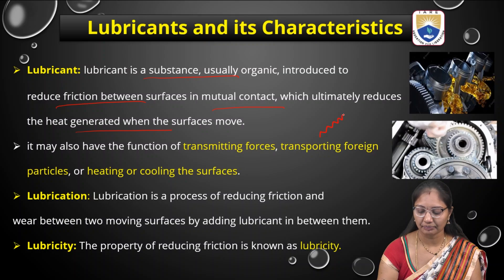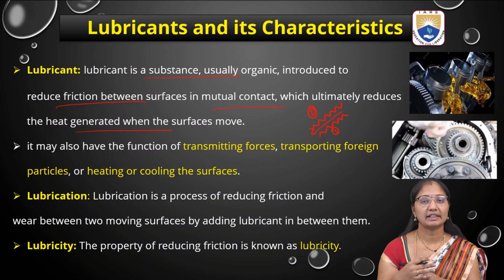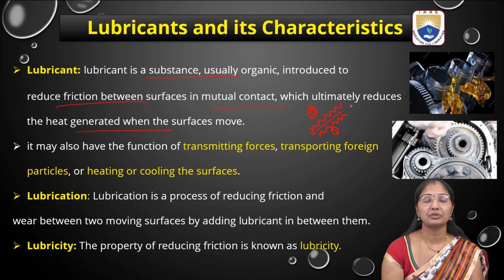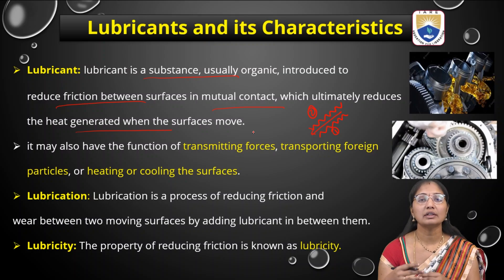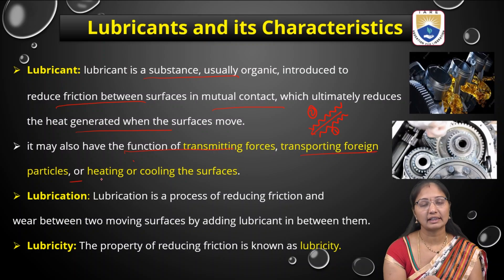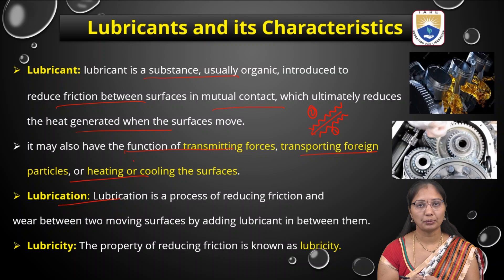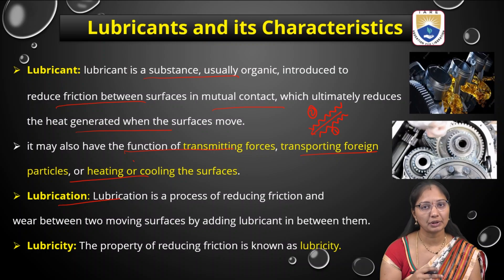Suppose there are two uneven surfaces. When they move, it causes friction, which results in the formation of heat. To reduce the friction, a lubricant has to be introduced between these two surfaces, which ultimately reduces the heat generated. It may also have the function of transmitting forces, transporting foreign particles, or heating or cooling the surfaces. This process is called lubrication — the process of reducing friction between two moving surfaces.